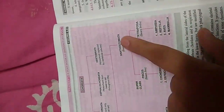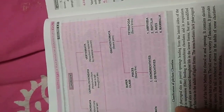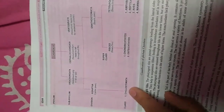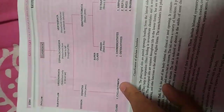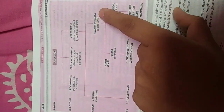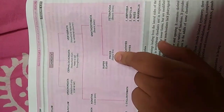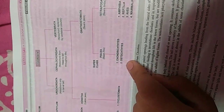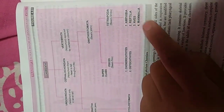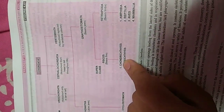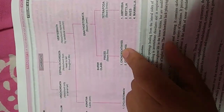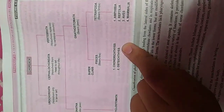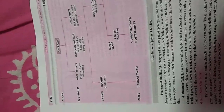Vertebrata is divided into two divisions: Agnatha and Gnathostomata. Agnatha is divided into one class, Cyclostomata. Gnathostomata is divided into two superclasses: Pisces and Tetrapoda. Tetrapoda is further divided into Amphibia, Reptilia, Aves, and Mammalia. Pisces is divided into Chondrichthyes and Osteichthyes. This is the classification of phylum Chordata.